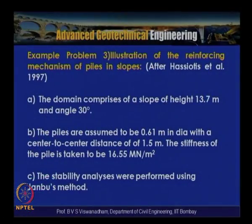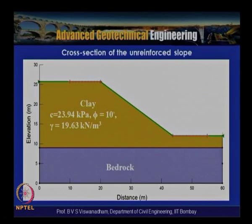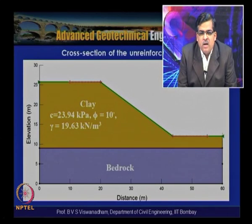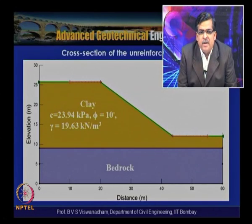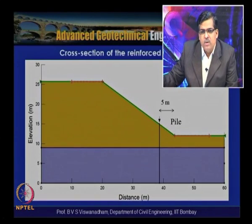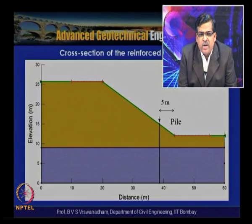The pile stiffness is taken as 16.55 MN/m², and stability analysis was performed using Janbu's method. The cross section shows a slope with 30-degree inclination, cohesion 23.94 kPa, friction angle 10 degrees, and unit weight 19.63 kN/m³. The pile was assumed to be located at 5 meters from the toe of the slope.